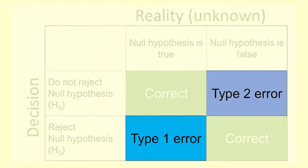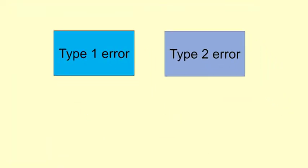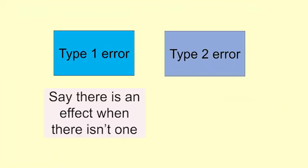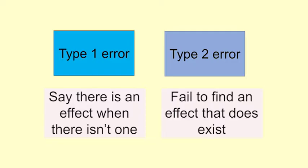Another way to look at it is that a Type 1 Error is when we wrongly say that there is an effect when there isn't one. And a Type 2 Error is when we fail to find an effect that does exist.